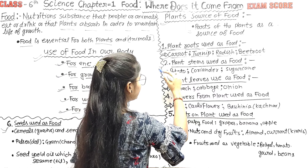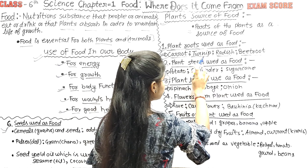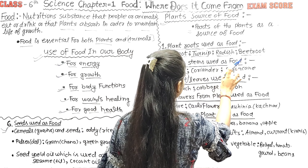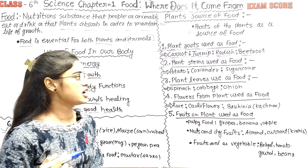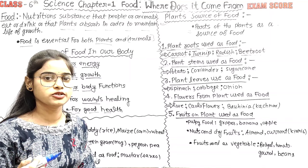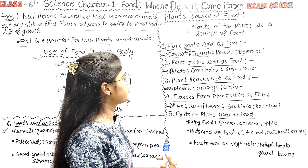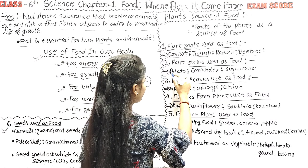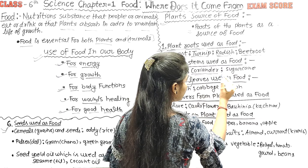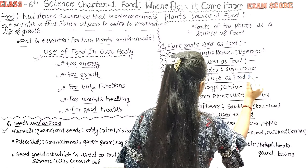The second part is the plant stem used as food. Examples of stems we eat include potatoes, coriander, and sugarcane.